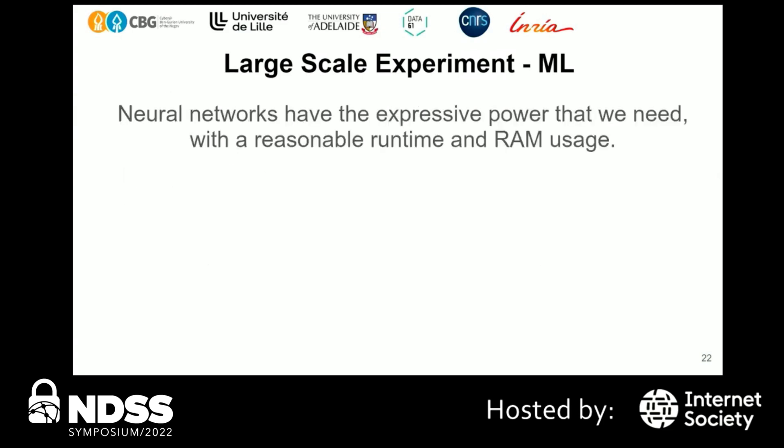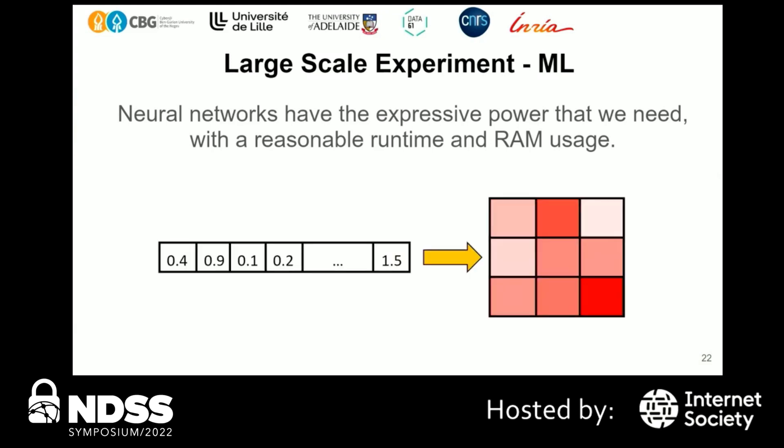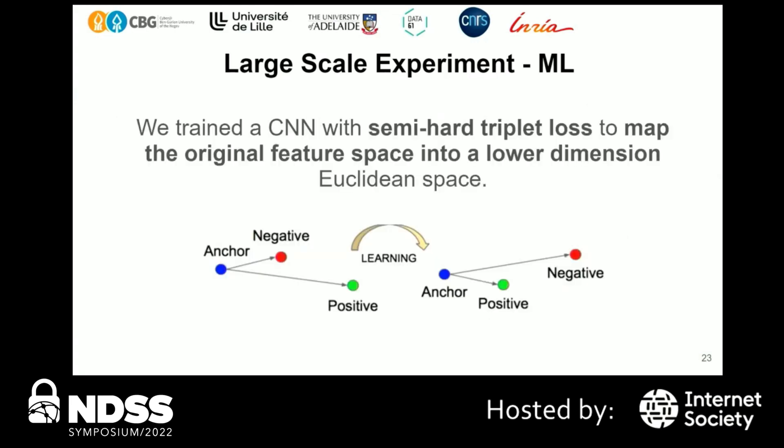So we switched our methodology and looked at neural networks, which have the expressive power we need with reasonable runtime and RAM usage. We took the trace — tabular timing data — and transformed it into a heatmap, essentially an image. Convolutional neural networks are really good at images, so we use them. We train the CNN with semi-hard triplet loss to map the original feature space into a lower-dimensional Euclidean space, grouping embeddings from the same device together and pushing them farther from embeddings of different devices.